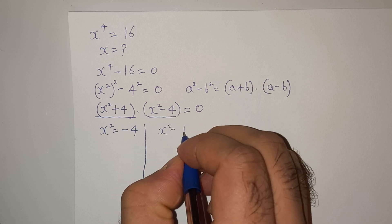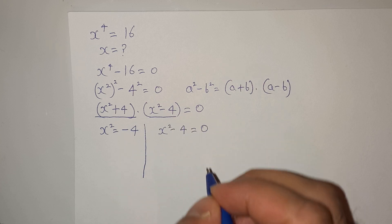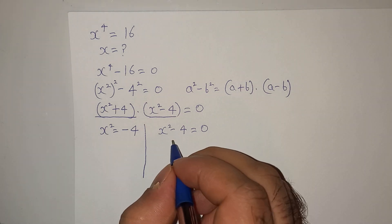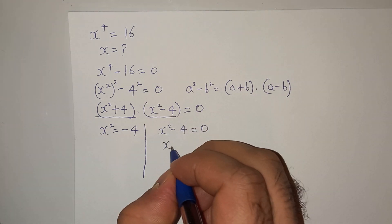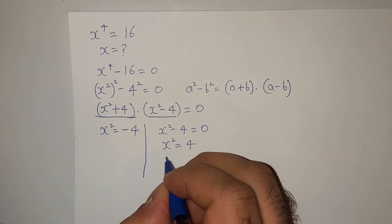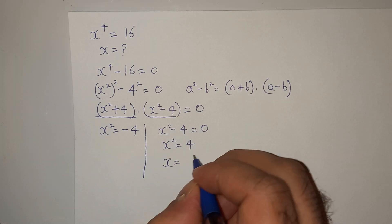Which is x square minus 4 equals 0. So this is quite clear what the value of x is going to be. This is going to be x square equals 4.